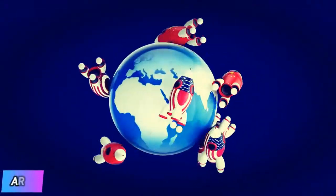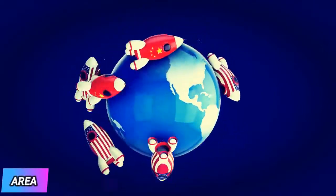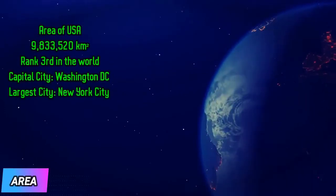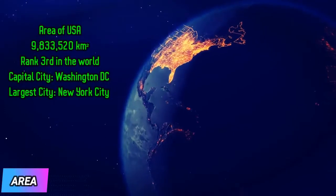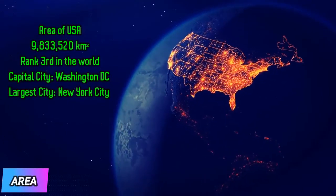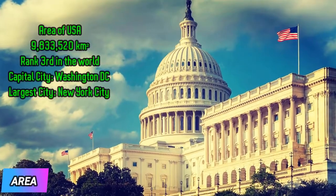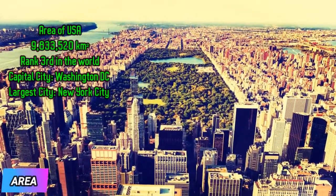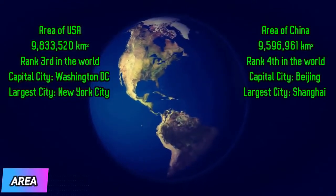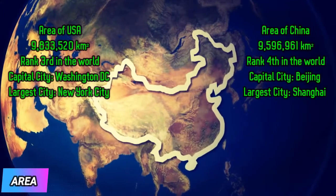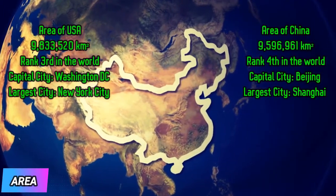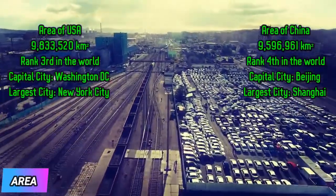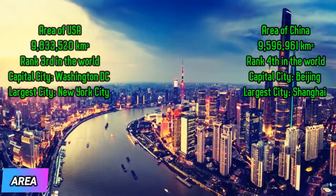A good way to comparatively visualize these countries is to analyze their total area. The US is spread over 9,833,520 square kilometers and is the third largest country in the world. Washington DC is the capital and New York City is the largest city of the United States. On the other hand, China has a total area of 9,596,961 square kilometers, making it the fourth largest country in the world. Beijing is the capital of China and Shanghai is the largest city.